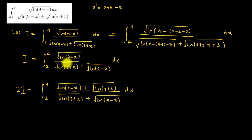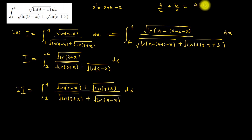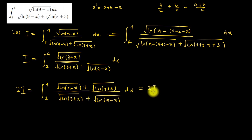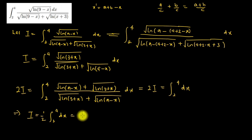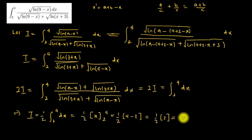Adding the two expressions for I together: 2I equals the integral from 2 to 4 of [√ln(9−x) + √ln(3+x)] divided by [√ln(3+x) + √ln(9−x)], dx. Since the numerator and denominator are identical, this simplifies to the integral from 2 to 4 of 1 dx. Therefore 2I = [x] from 2 to 4 = 4 − 2 = 2, so I = 1/2 × 2 = 1. The answer to this integral is 1.